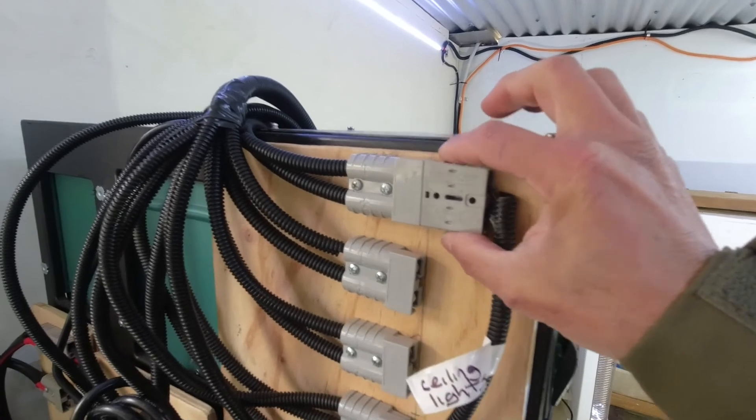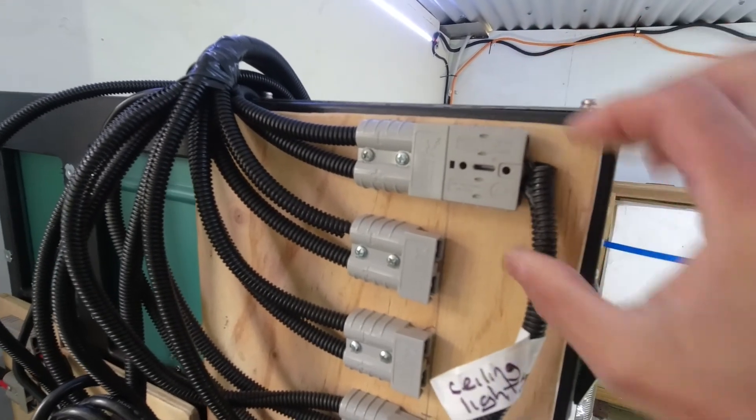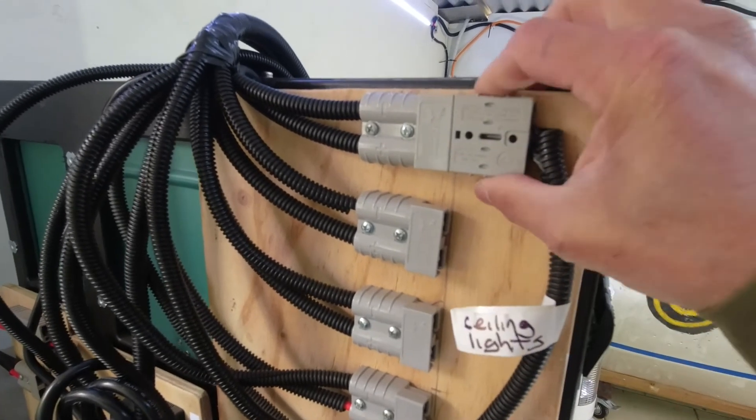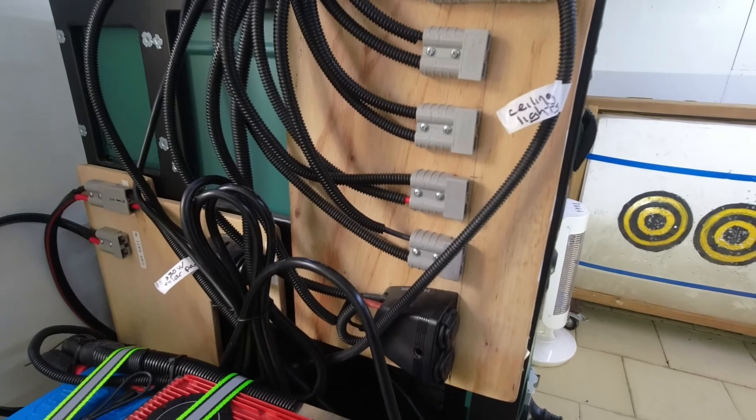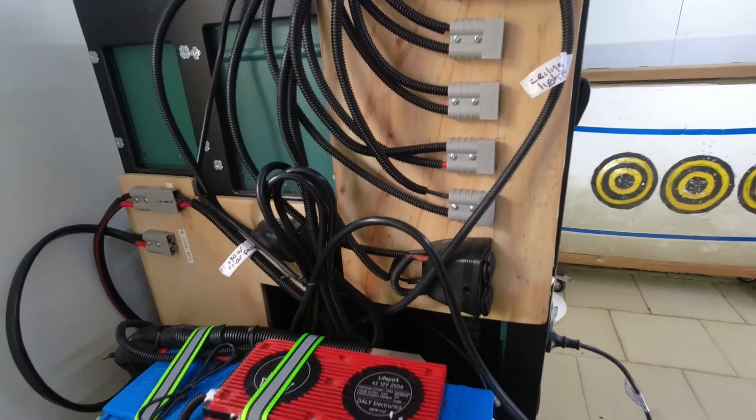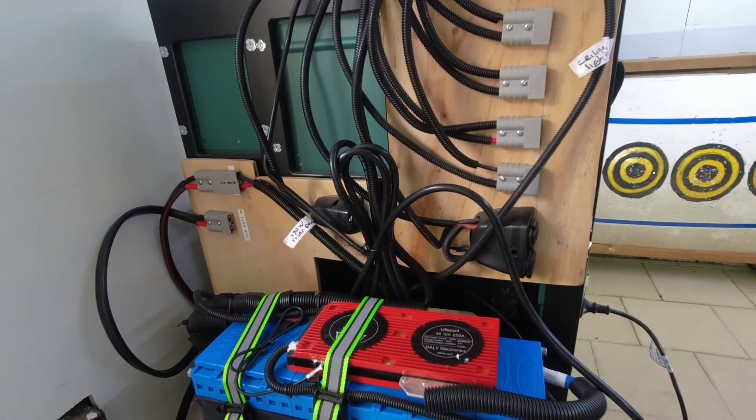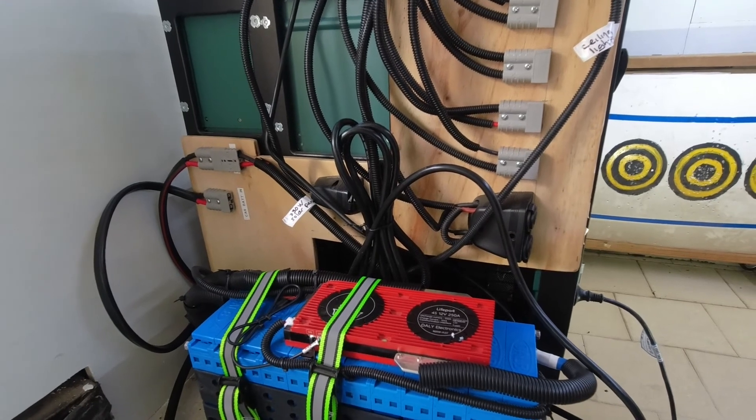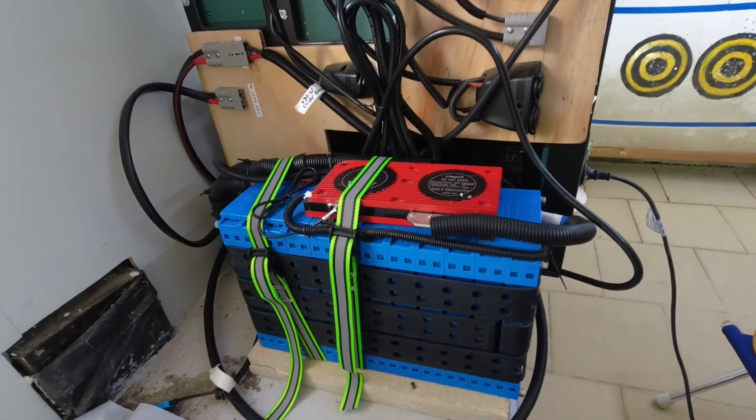And this SB50 Anderson plug I have here is how I connect to the ceiling lights and every other load device. This makes it very easy for me to remove this entire system so that I can move it if I want to, say to a four-wheel drive utility truck. This is how I designed this system.